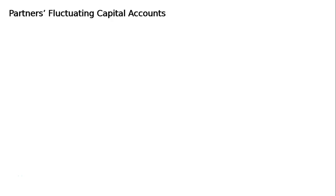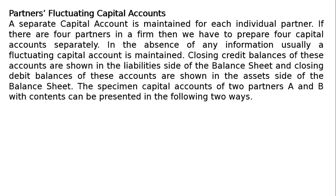This is about partners' fluctuating capital accounts. There are two types of capital accounts: one is fixed, the other one is fluctuating. In case of fluctuating capital accounts, a separate capital account is maintained for each individual partner. If there are four partners in a firm, then we have to prepare four capital accounts separately.